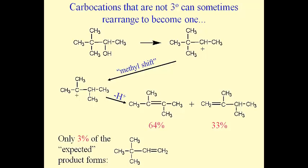Recall from chapter 4 that carbocations vary in stability. Tertiary ones are most stable, primary ones are least stable, and primary ones are so unstable they generally refuse to form when we undergo either substitution or elimination reactions. The E2 mechanism describes how primary alcohols can undergo elimination reactions without necessarily having to form an unstable carbocation.